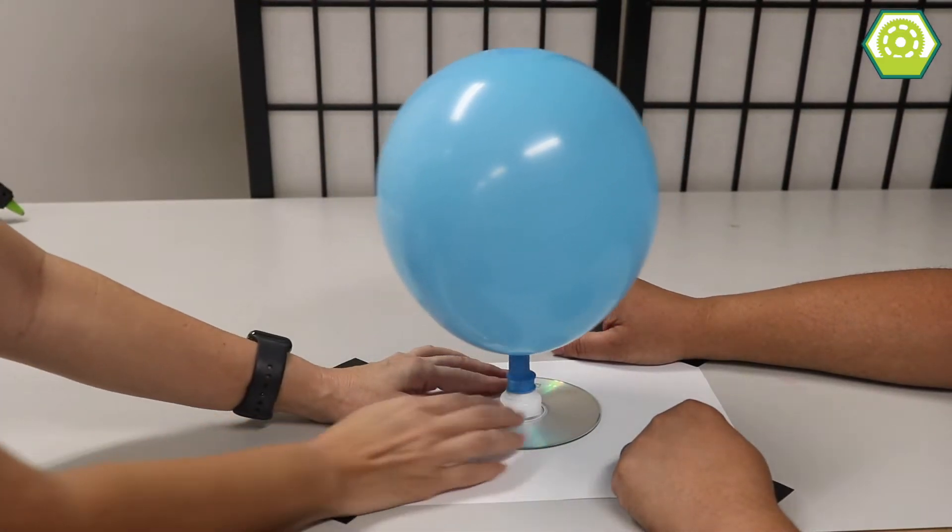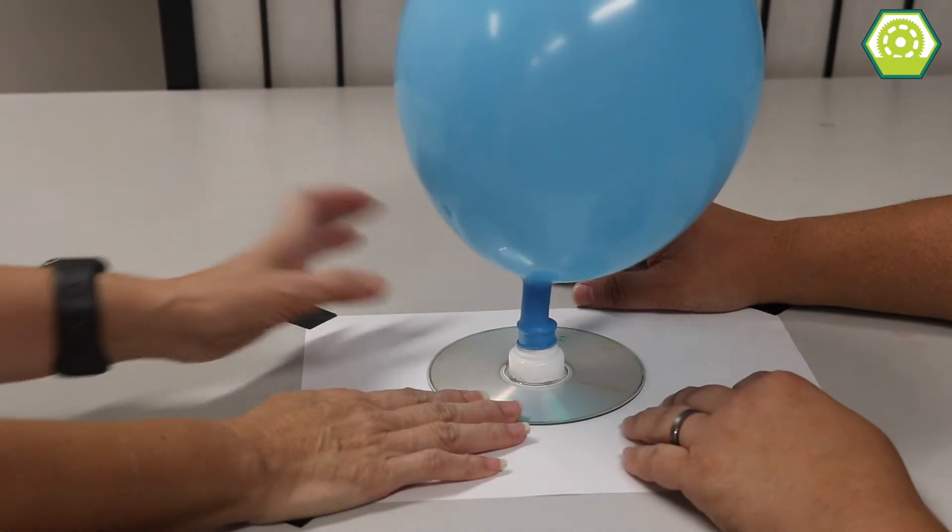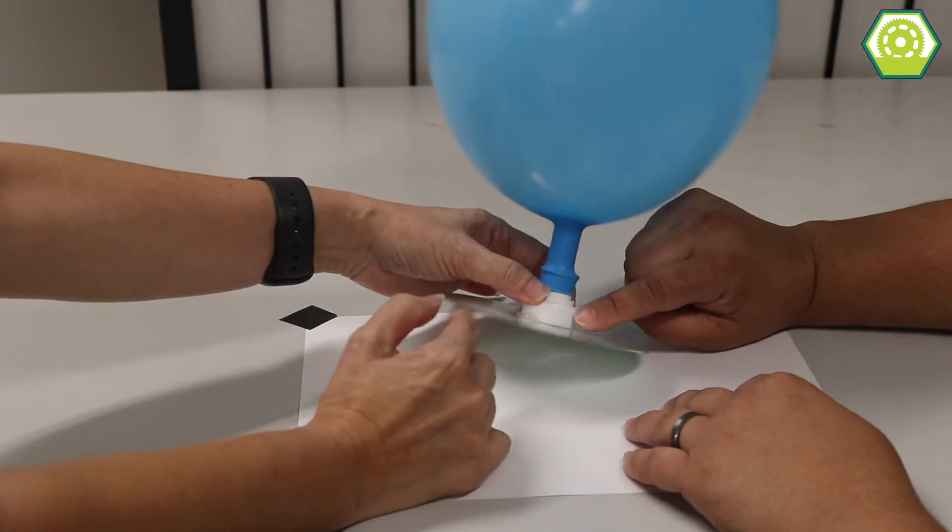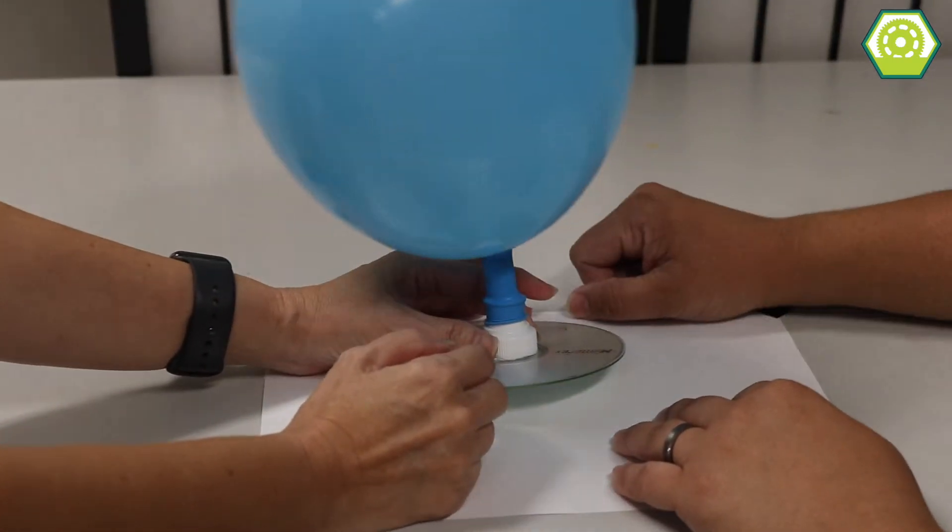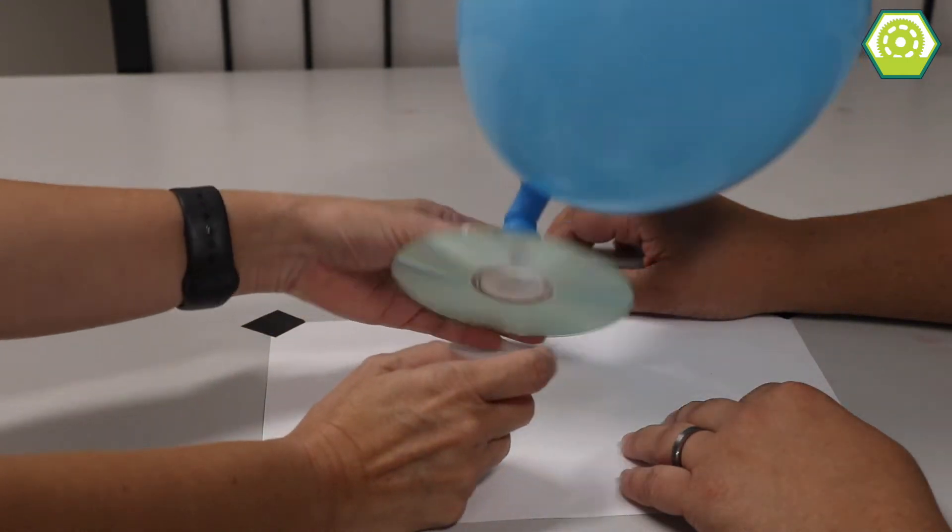Simple, simple. So all you do is, I already made one, so it's actually gonna move using air. Okay, so I blew up a balloon, attached it to a cap. Well, that looks like from a water bottle. Yeah, like a water bottle, like a sport like a Gatorade or... Yeah, you got it.